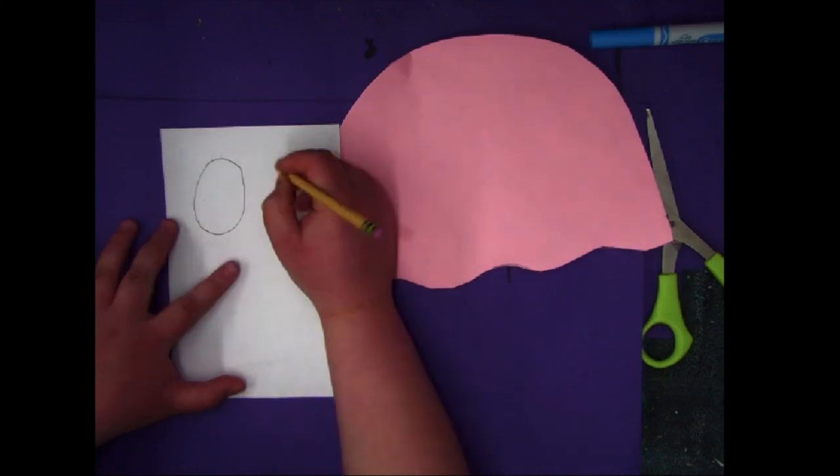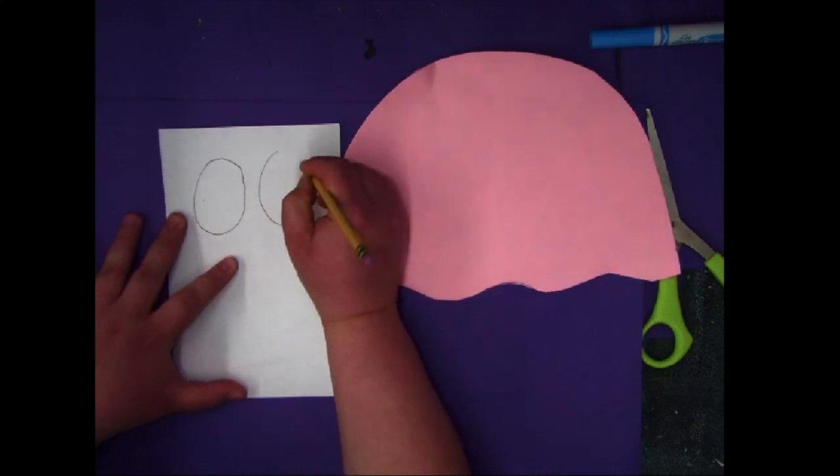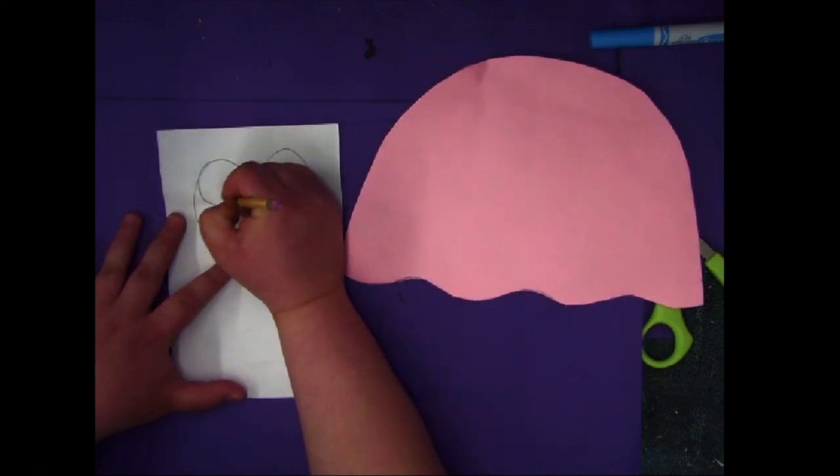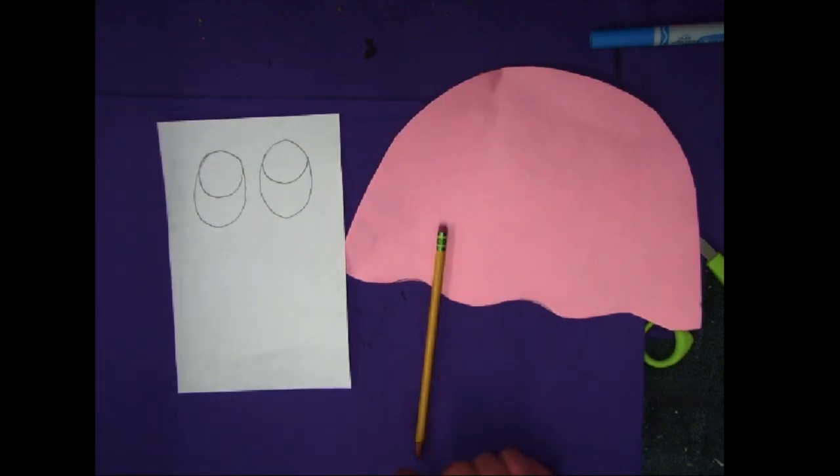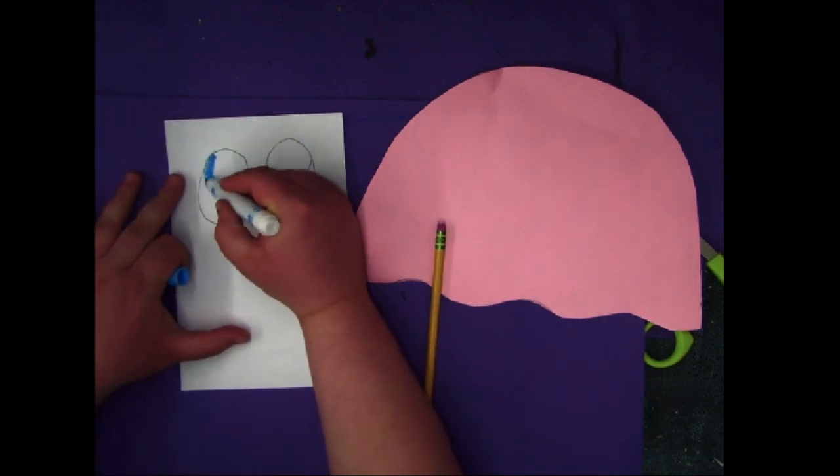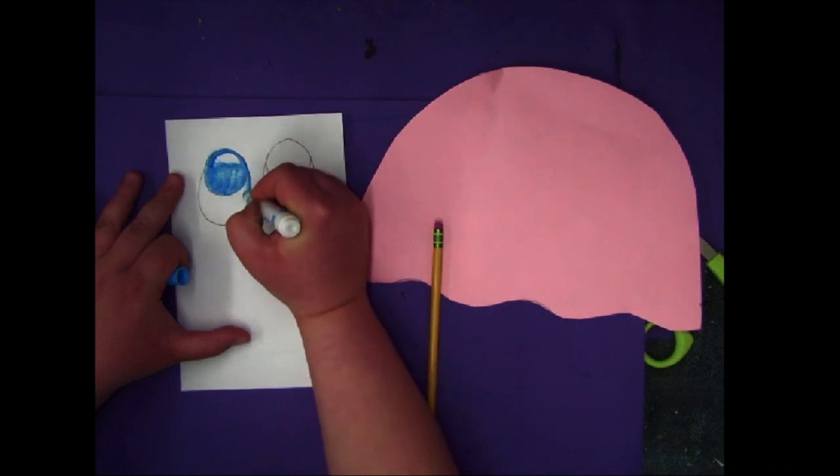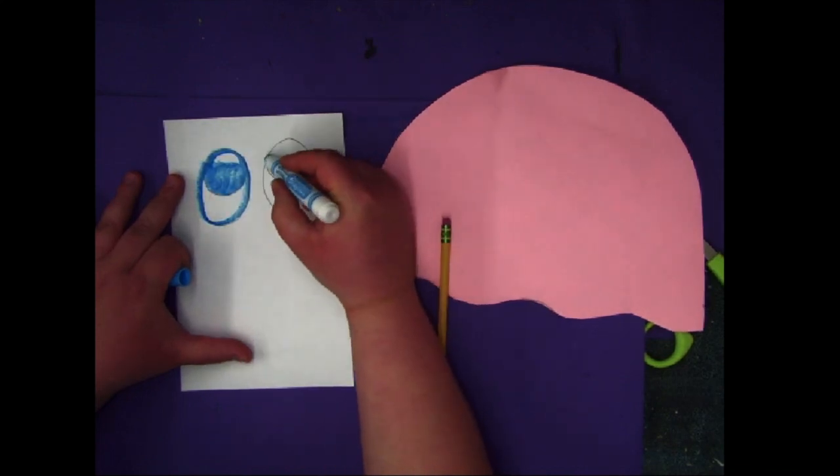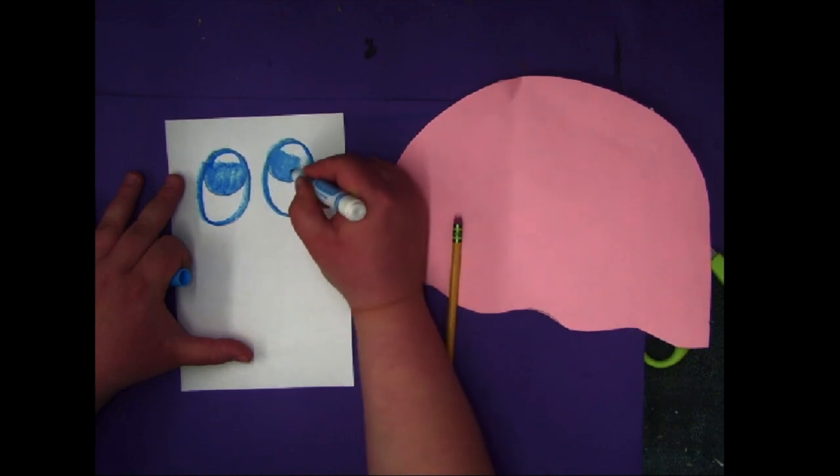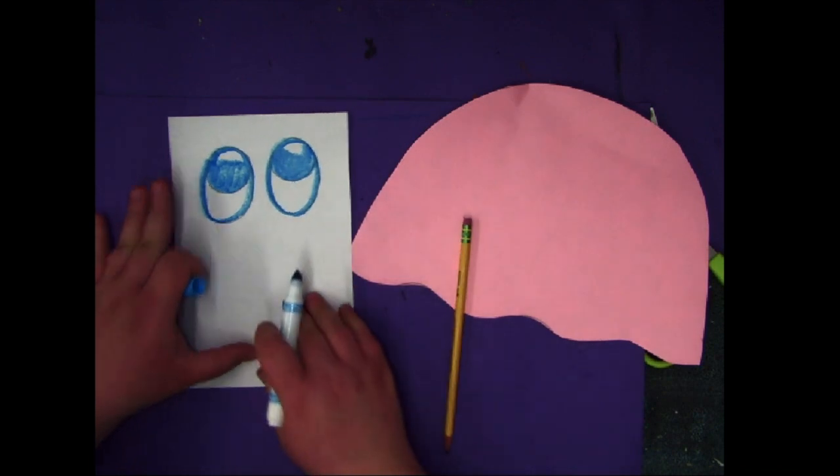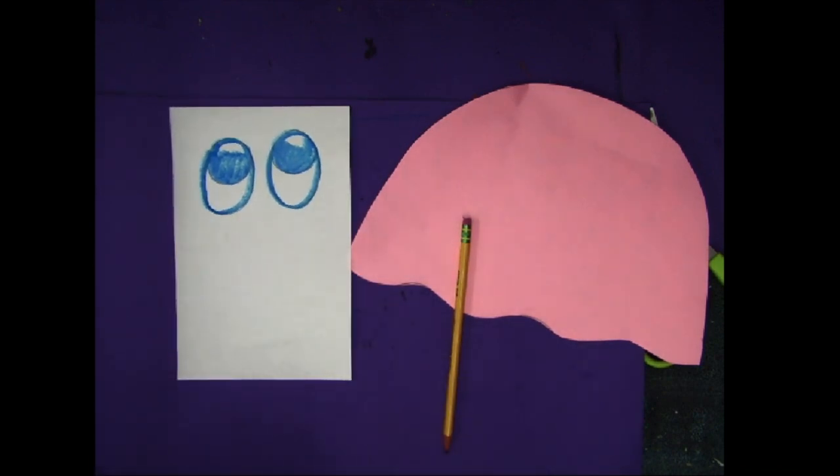And for coloring in the eyes, you can use whatever color, doesn't have to be black, but I'm going to color mine in with blue. You can outline and color with whatever color you want, just like that. And then what I'm going to do is I'm going to come out and I'm going to glue them on with a glue stick.